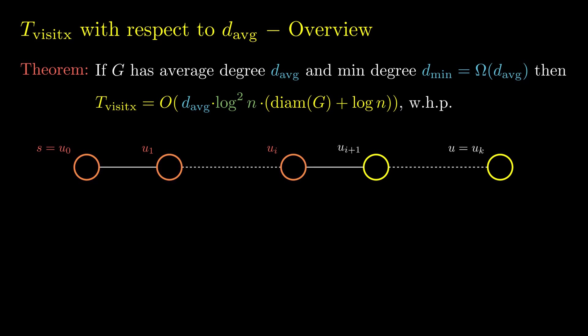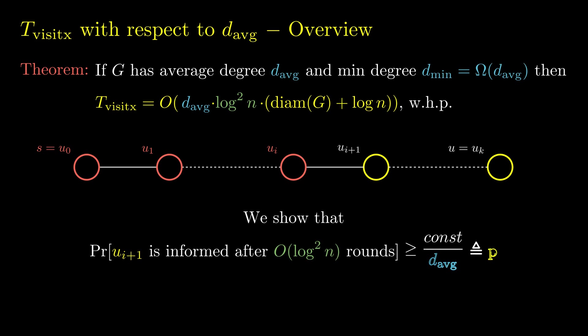Suppose at some round u_i is informed as shown in the picture. We show that given this state, after at most log squared n rounds, the next vertex u_{i+1} becomes informed with probability at least a constant divided by the average degree of the graph. This is the success probability of one phase, denoted by p. The phases are successful independently from one another, so by the expectation of a geometric random variable, visit exchange makes progress along the path after 1/p rounds in expectation. By considering the vertices of the path one by one and using a Chernoff bound for geometric random variables, we are able to prove the result.